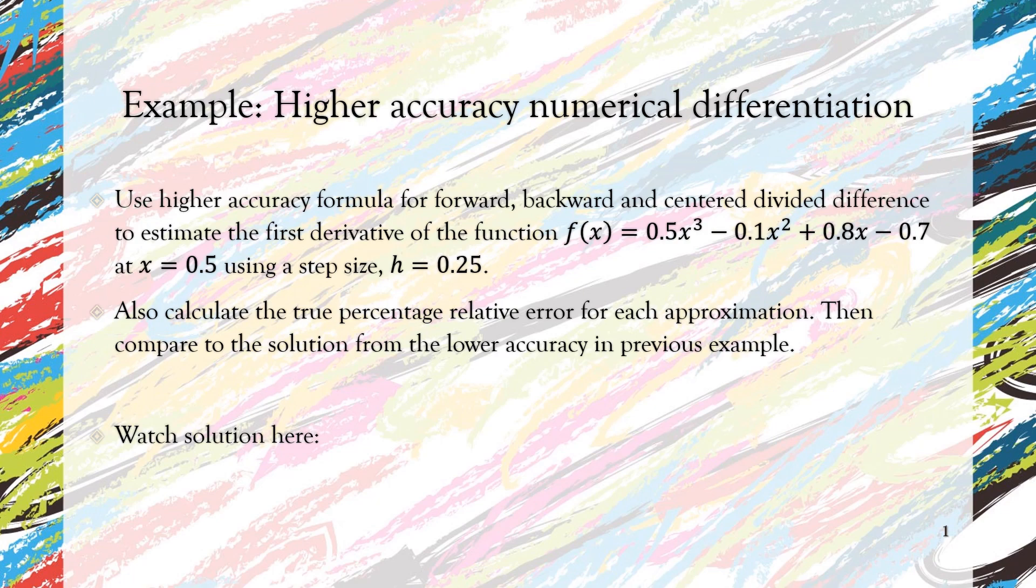We also solved it using forward finite difference, backward finite divided difference, and centered finite divided difference. But all of those methods were formulated based on the Taylor series expansion, and from that Taylor series expansion, we truncate starting from the second term. So in the previous example, we solved it using FDD, BDD, and CDD with a lower accuracy.